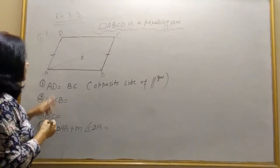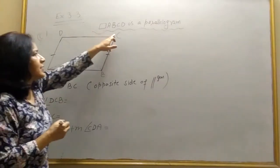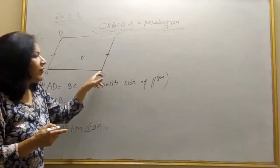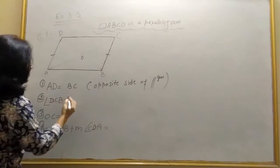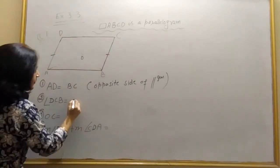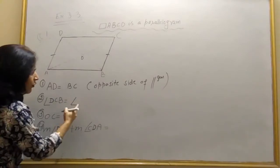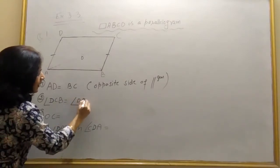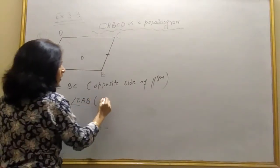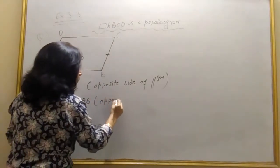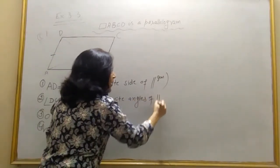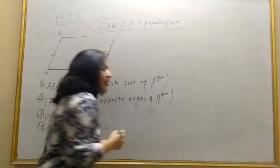Second: angle BCD will be equal to angle BAB. Angle BCD will be equal to angle DAB. Again, opposite angles of a parallelogram are equal.